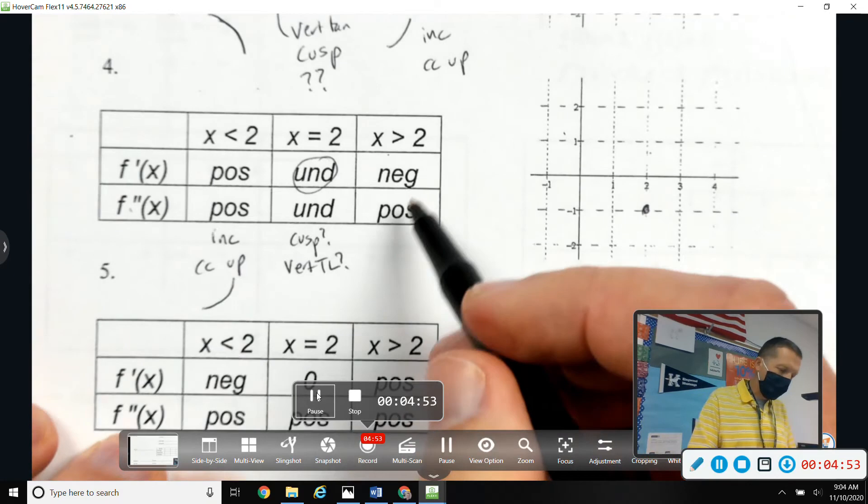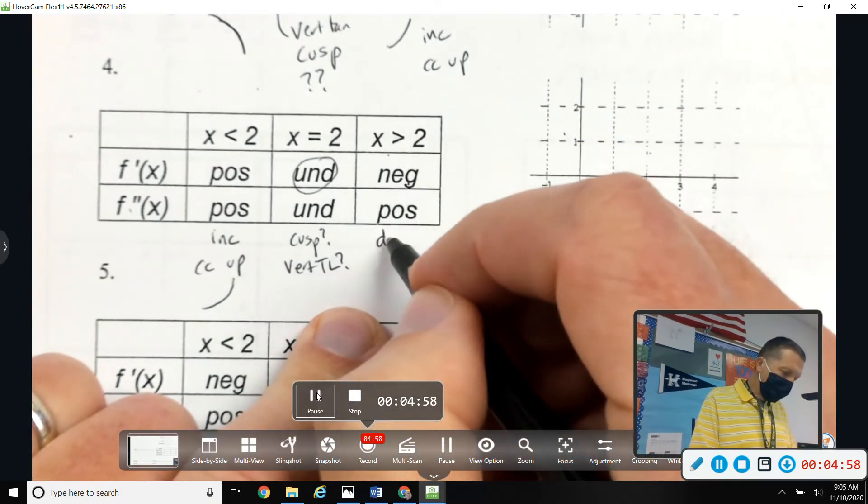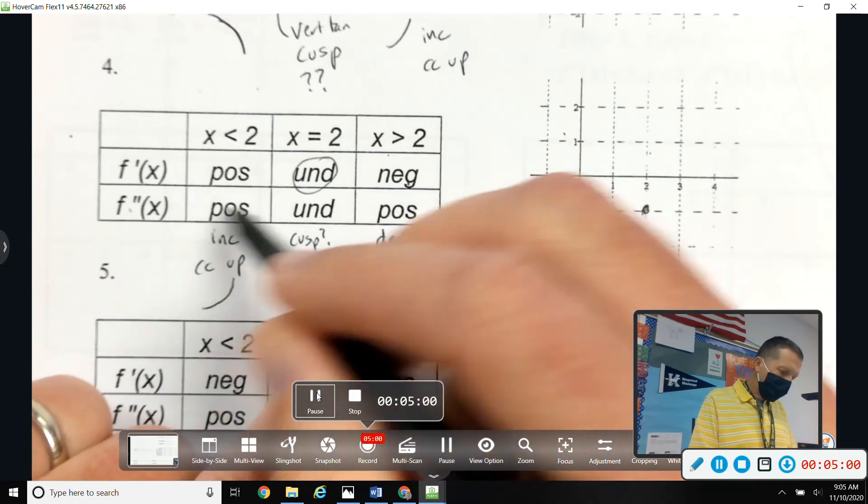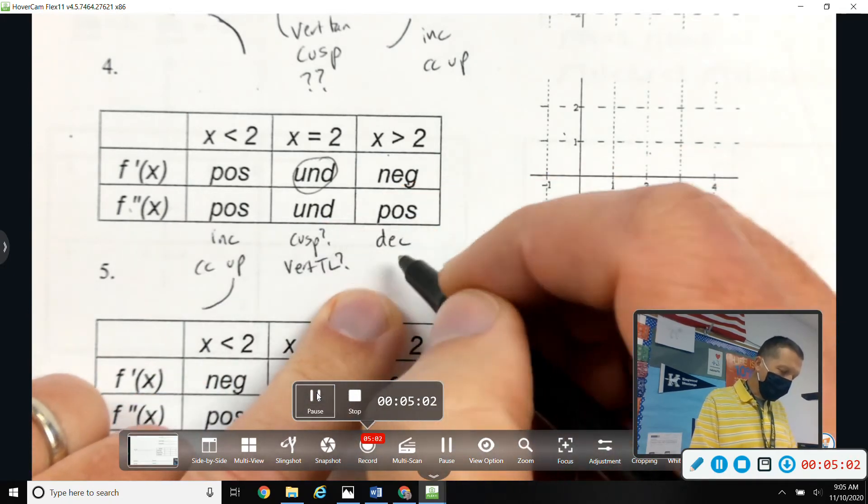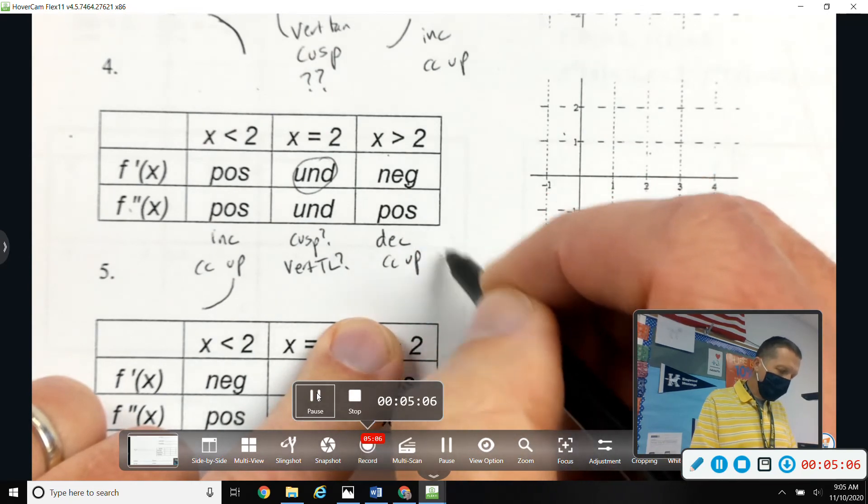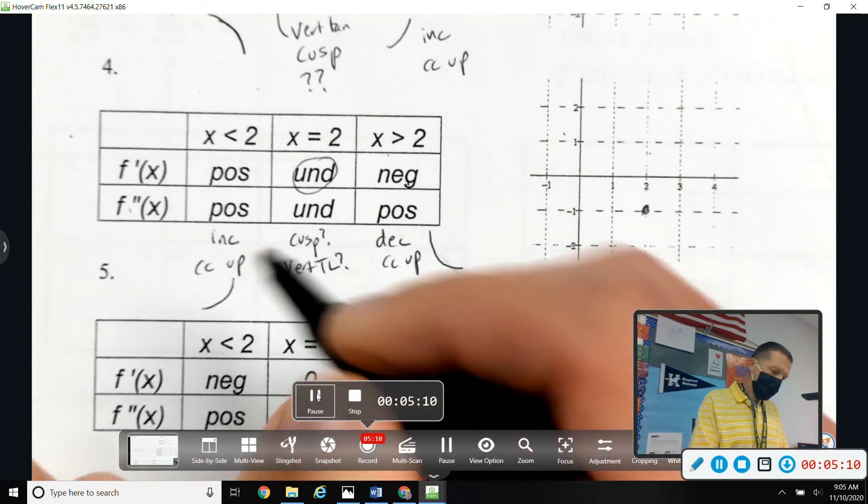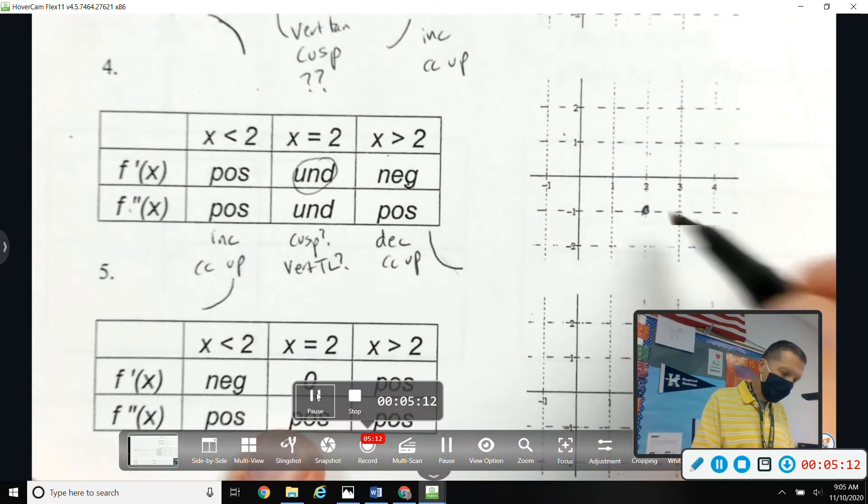Undefined, okay. Again, something strange is going on - cusp maybe, vertical tangent line maybe. Undefined - no asymptotes, no, because that got ruled out. On the other side, f prime negative, so that means we're decreasing. F double prime positive, so concave up. So decreasing but concave up, so this until I get to that point.